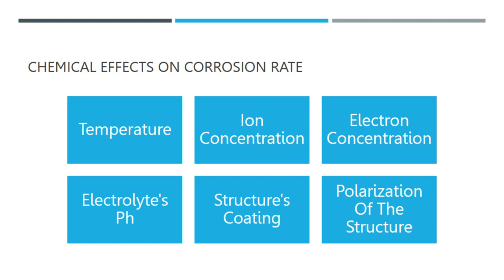The fifth aspect is the structure's coating, which may impact the ion migration rate at the anode and cathode, slowing corrosion as the migration rate does. Temperature, pH, and ion concentration of the environment can all be impacted by structure coatings. The sixth is polarization of the structure, which works as an extra coating and changes the pH and ion concentration in the electrolyte next to the structure. Particularly when there is a stray current present, the ratio of the anodic to cathodic area can have a significant impact on the rate of corrosion. The corrosion is concentrated and typically gets worse when the cathodic area is large and the anodic area is very small.